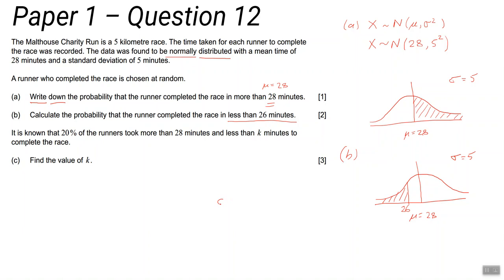Part (c), again let's draw a normal distribution curve. This is the third one I've drawn. Sigma is 5, mean is 28. I'm taking the time every time to write this out. 20% of the runners took more than 28 minutes and less than k minutes. So more than 28, to the right of 28, but to the left of some value k that we don't know. We know this probability is 20%, so that's 0.2.